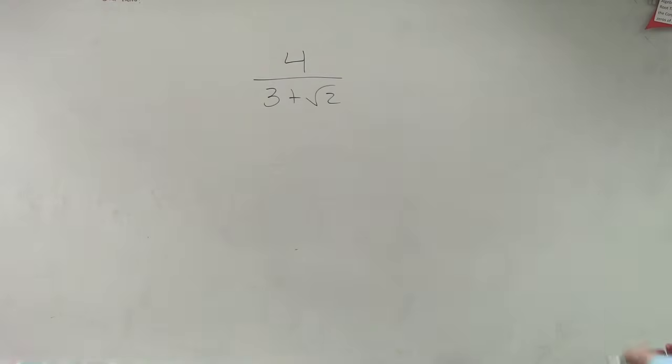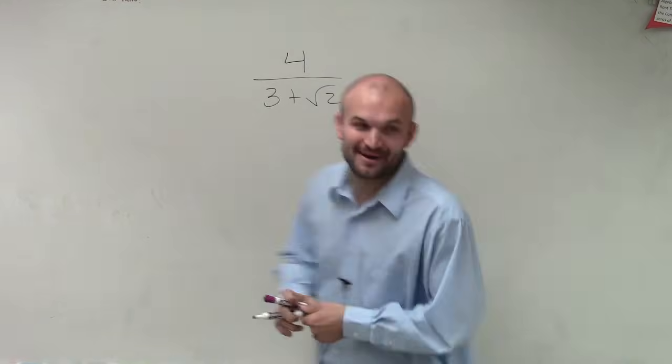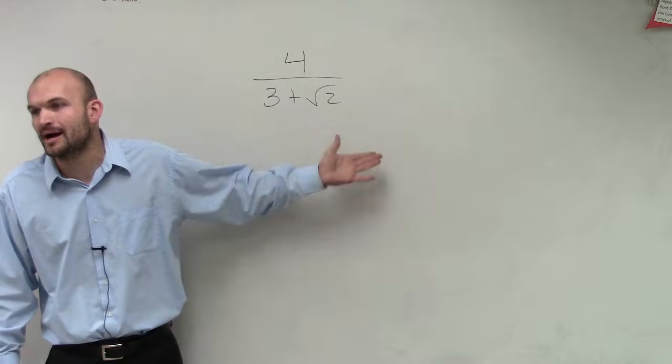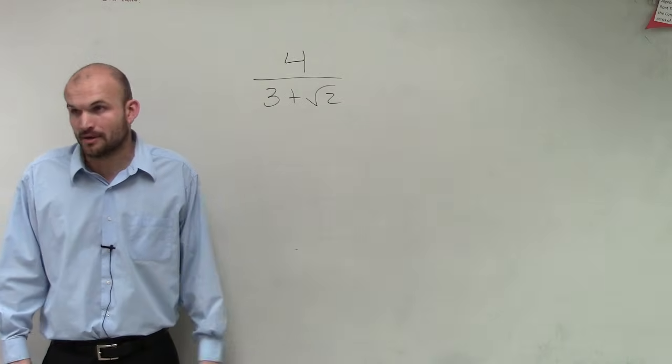So what we're going to do for this problem is 4 divided by 3 plus the square root of 2. And ladies and gentlemen, remember we cannot divide by a radical number on the bottom.